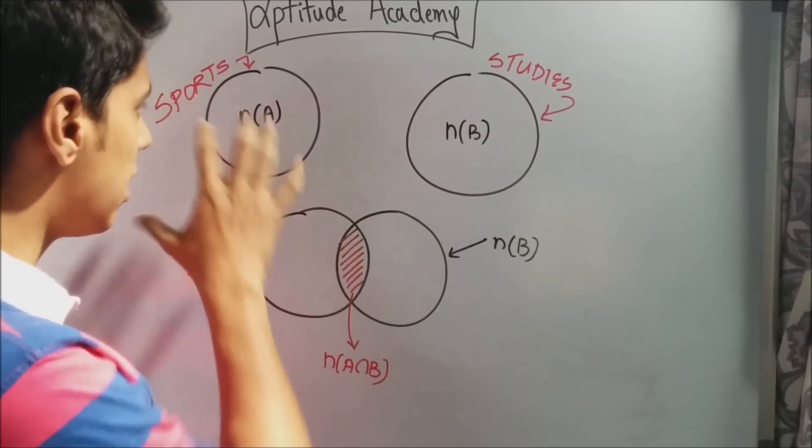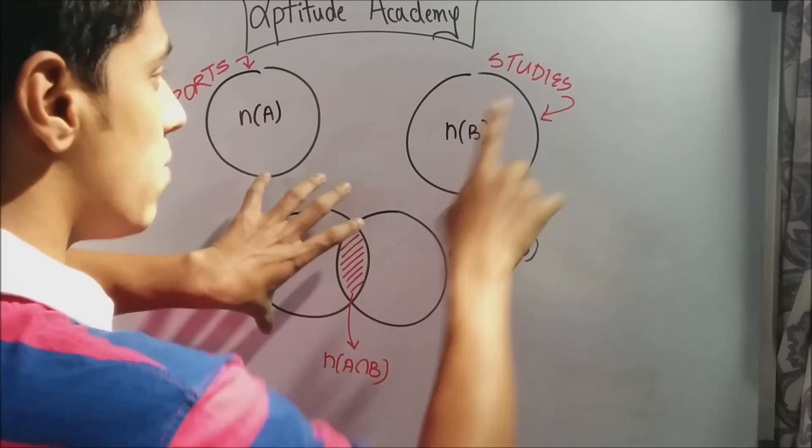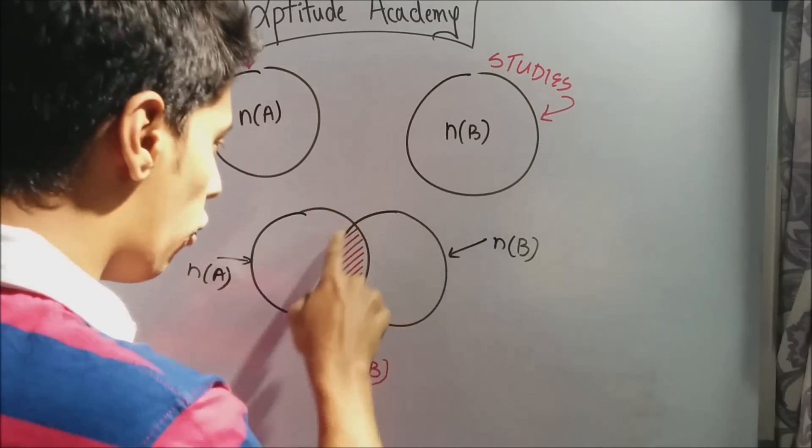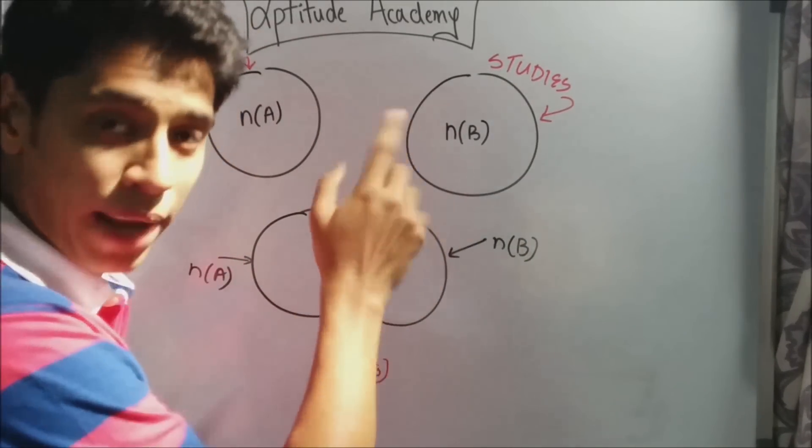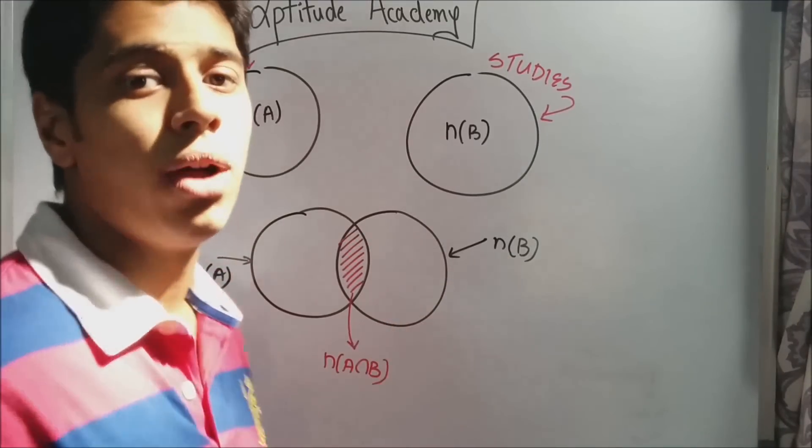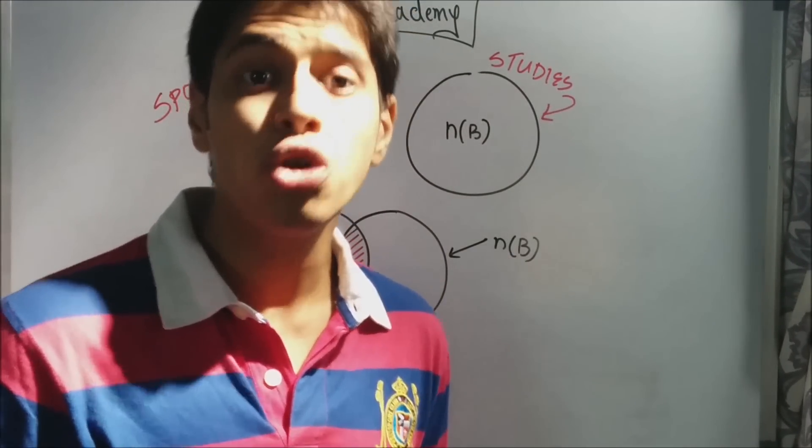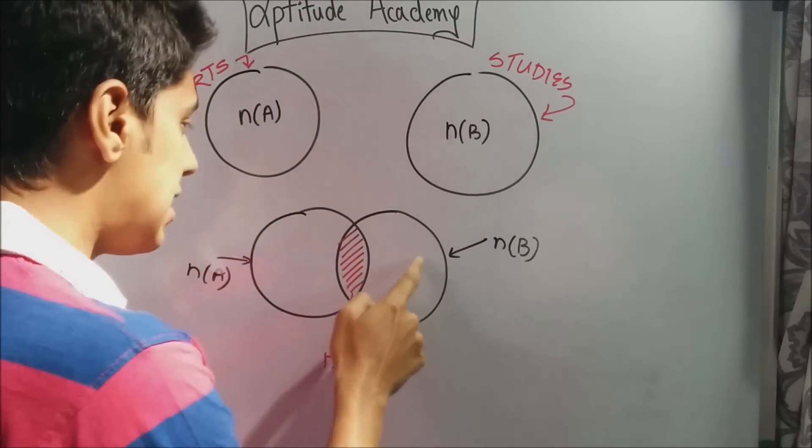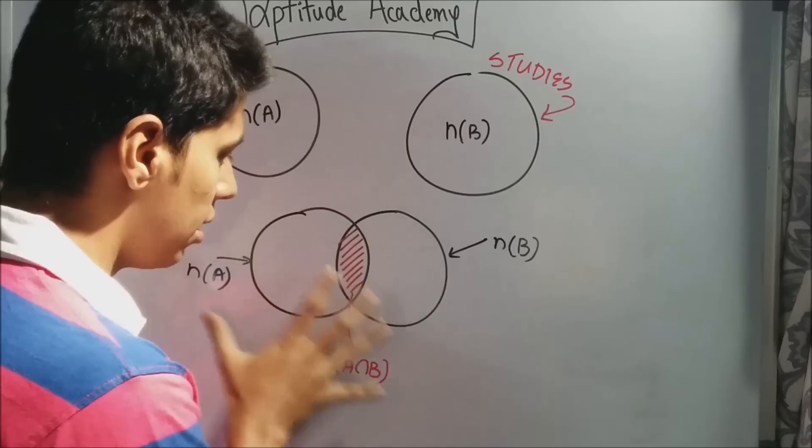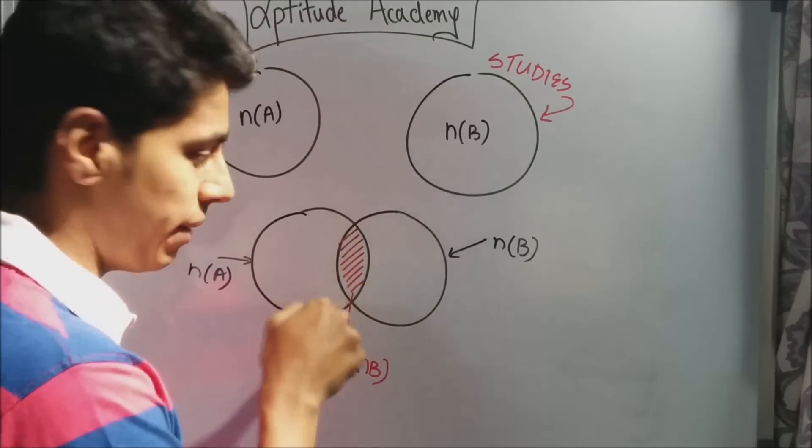Now, when you overlap n(A), that's the people who play sports as well as people who study, the overlap region will contain those students that play as well as study. Now, how do you find the people that either play or study or do both of them? That is this entire section. They either play sports or they study or they do both of them.